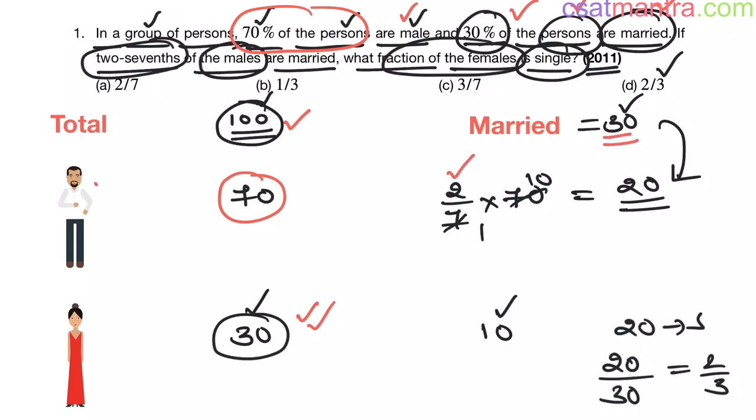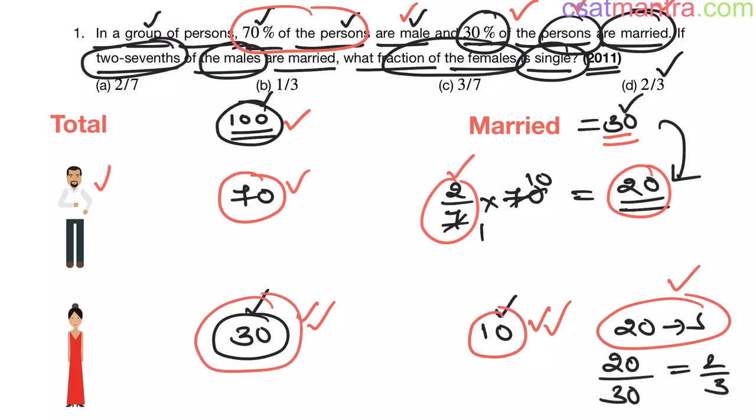Now, two-sevenths of males are married, two-sevenths of 70, that is equal to 20. Now, the remaining married people will be from females, that is equal to 10. So, since 10 people are married in females, 20 people will be single. This 20 is what fraction of this 30? Very simple.